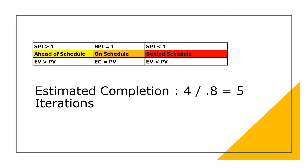The analysis of the SPI is comparable to the CPI analysis. An estimated completion can be calculated by dividing the planned iterations by the SPI. In our example, we planned to finish the work in 4 iterations and now expect to need 4 divided by 0.8, which equals 5 iterations.